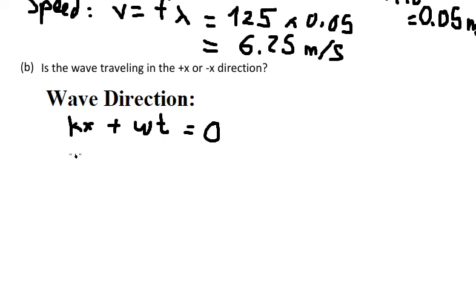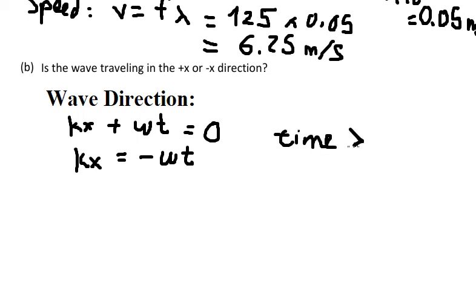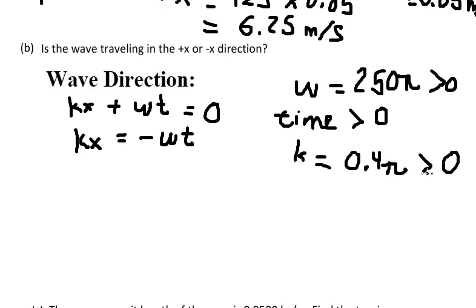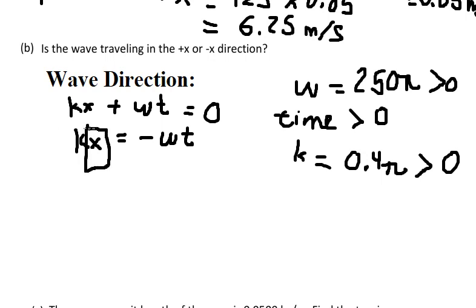Rearranging, we get k·S equals negative omega·T. We know that T is time, which is always a positive number. Omega is also positive, so omega·T is positive. Our k value 0.4π is also positive. Because the right side is negative and k is positive, S must be negative.